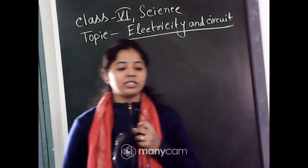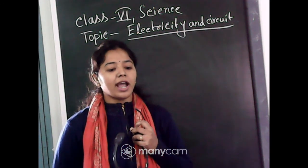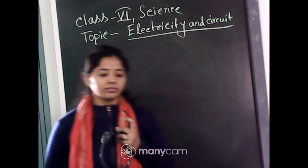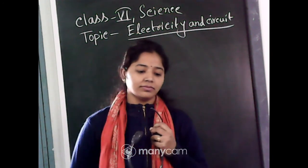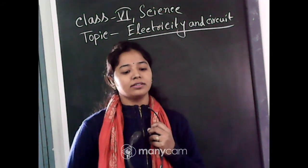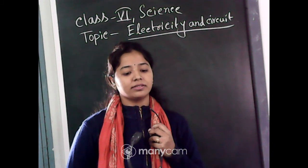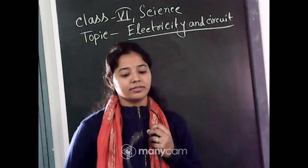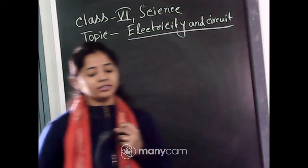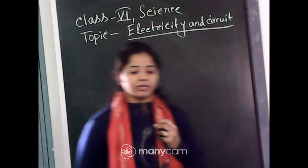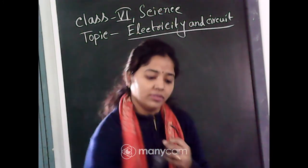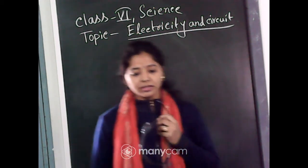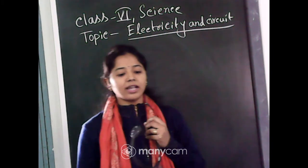What are the main things needed to make an electric circuit? Write in your chat box first. Very good, Deepthak — electric cell, bulb, wires, and switch.